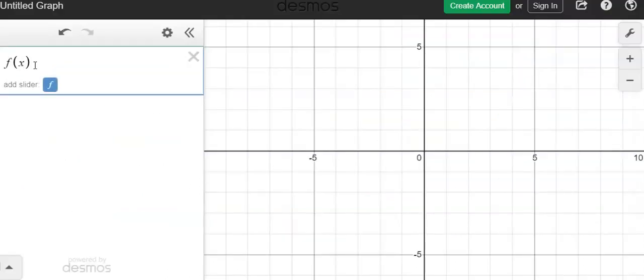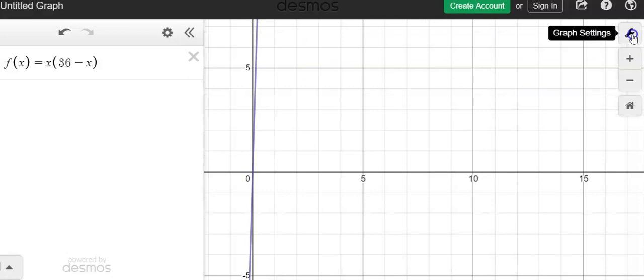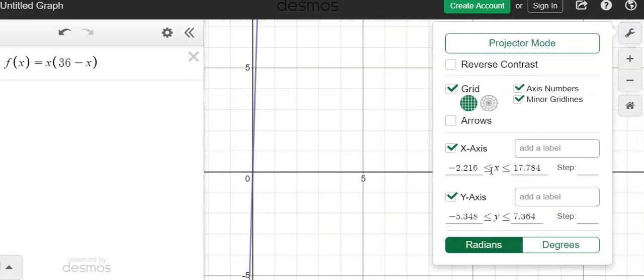I'm going to type in the function equation f of x equals x times 36 minus x. Now when I'm looking at my graph, I can see a curve here, but there's more to this picture that I can't see. So I'm going to go to my graph settings.